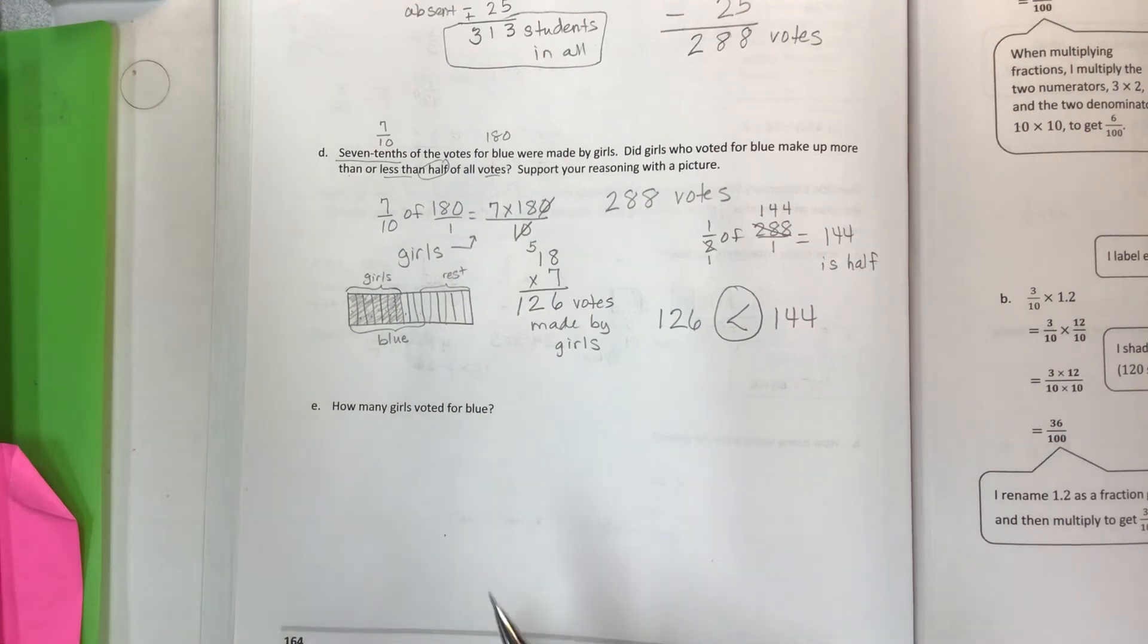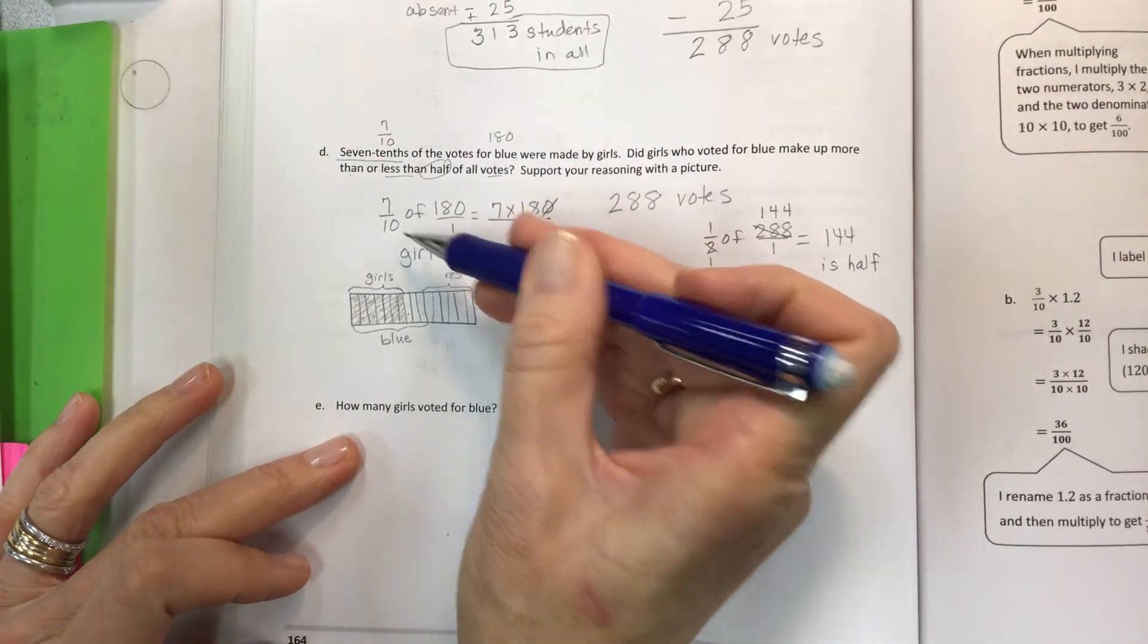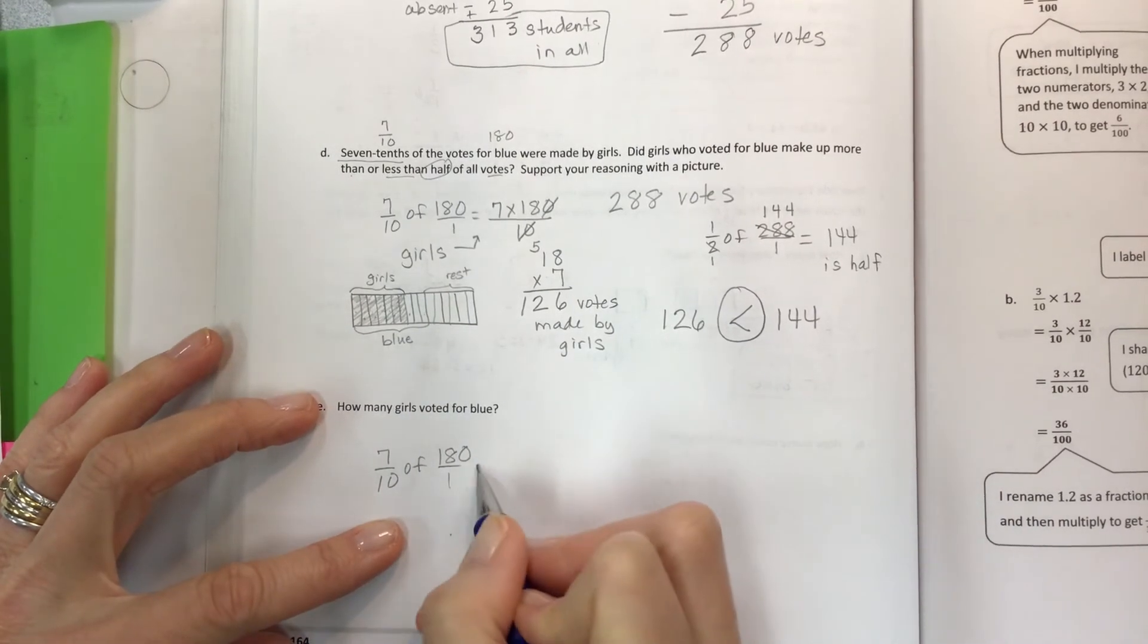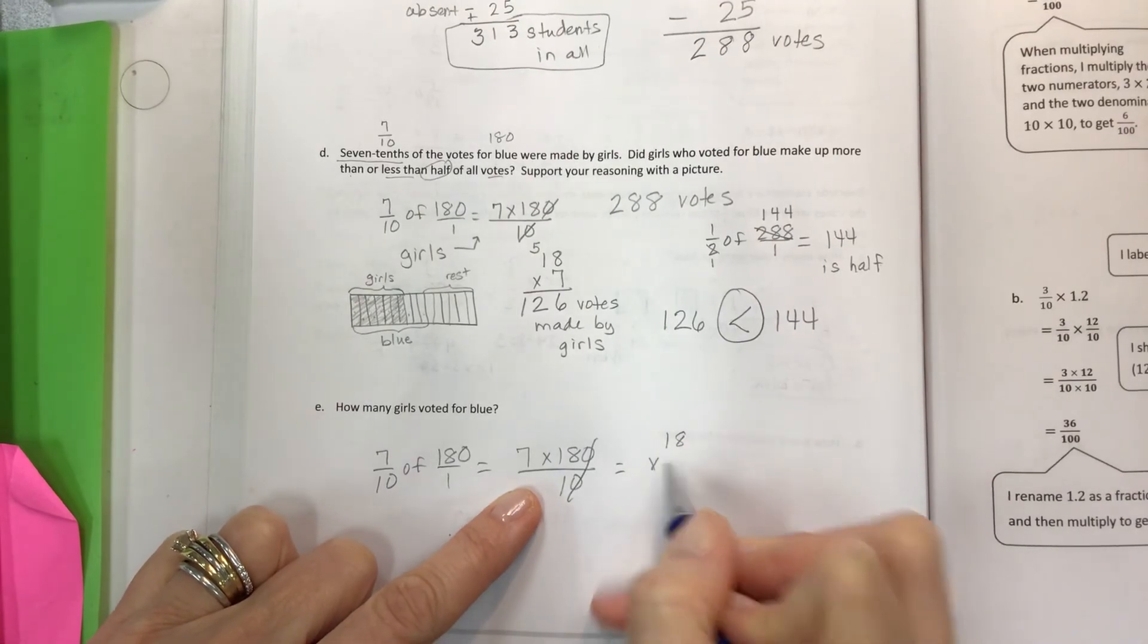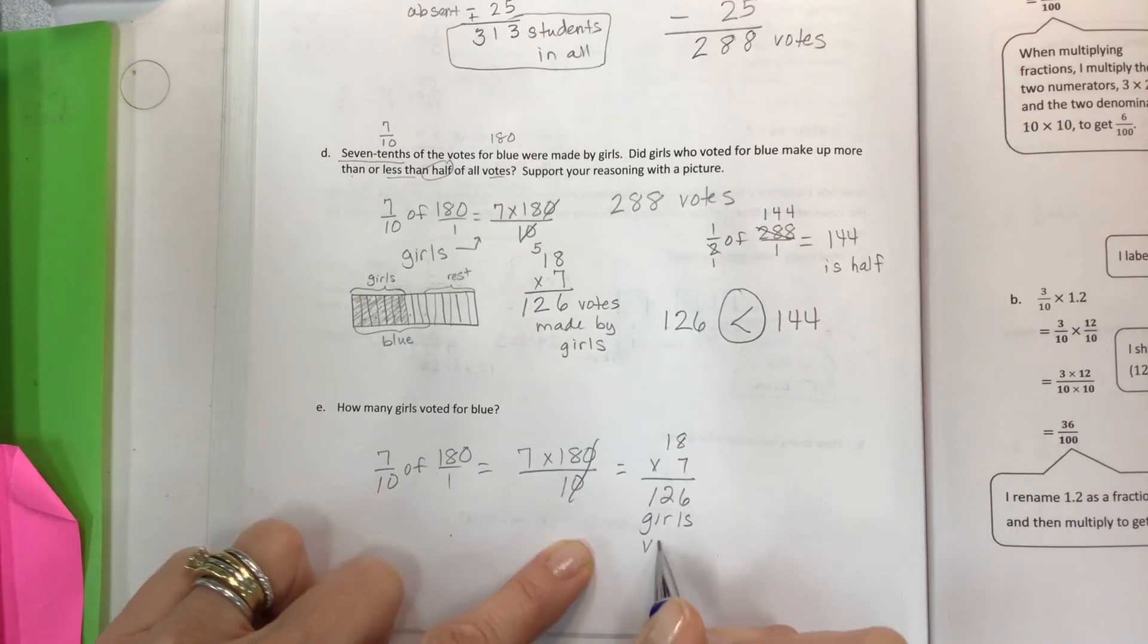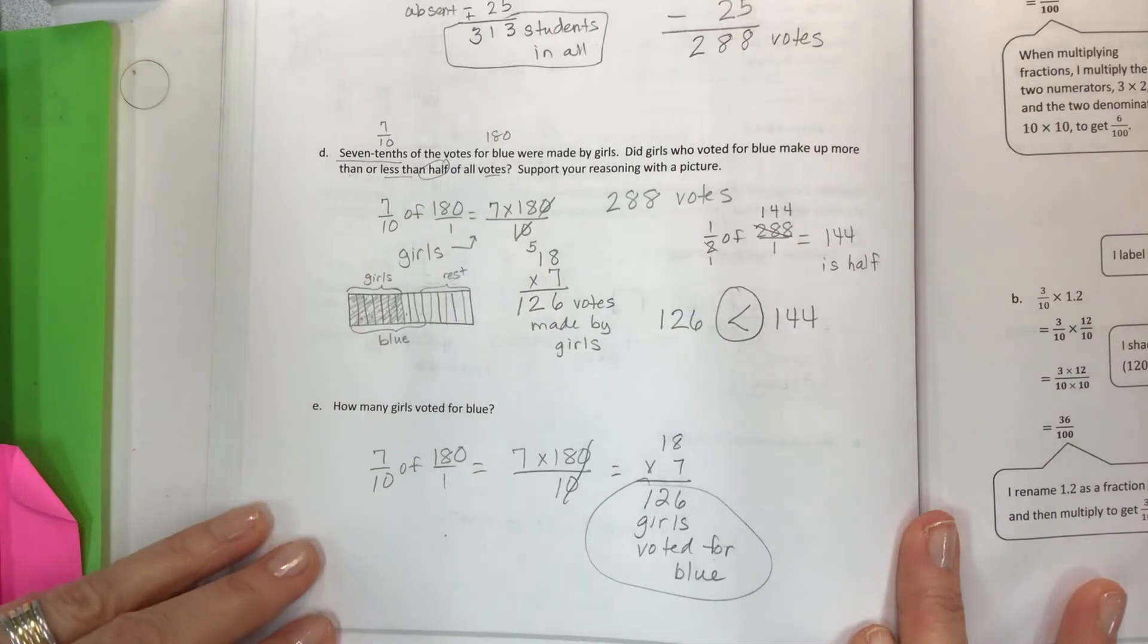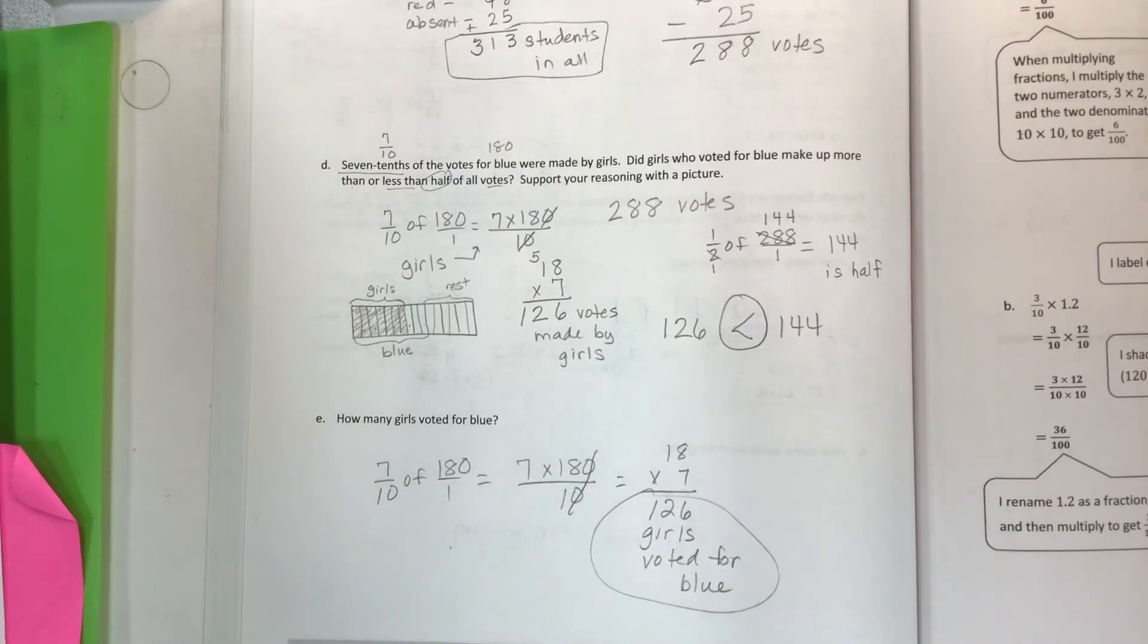And finally, how many girls voted for blue? So this one, a couple different ways. You can do the 7 tenths of the total number of votes for blue, which we kind of already solved. 126 girls voted for blue. Kind of redundant, again. And especially if you do it here and you're looking at the picture. So anyway, I hope this is helpful. Tough lesson today. But hopefully you're kind of getting the hang of it. Really just using the tape diagrams to help you find the part of the whole.